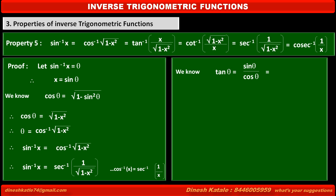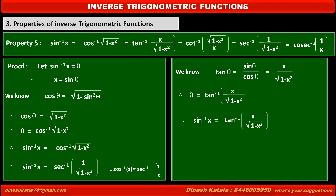We know tan theta is equal to sin theta upon cos theta, which is equal to x upon under root 1 minus x square. Therefore, we can write theta is equal to tan inverse of x upon under root 1 minus x square. Therefore, sin inverse x is equal to tan inverse of x upon under root 1 minus x square.